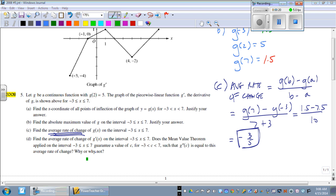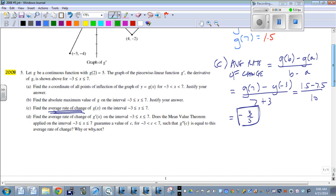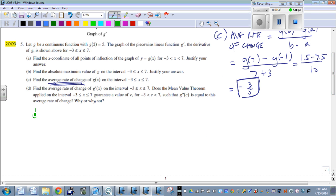So it's basically asking us, does the mean value theorem work with this derivative? So first, let's do the easy part. Not that the other part's that hard, but it's something we have to think back to. Average rate of change of the derivative. So it's just like what we did on C, only with the derivative.